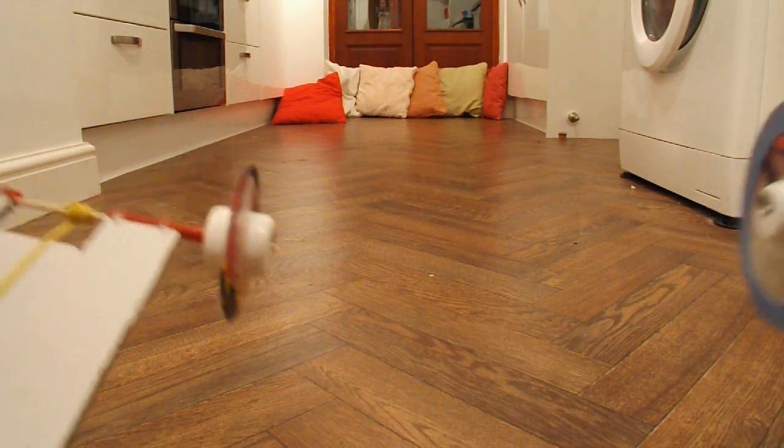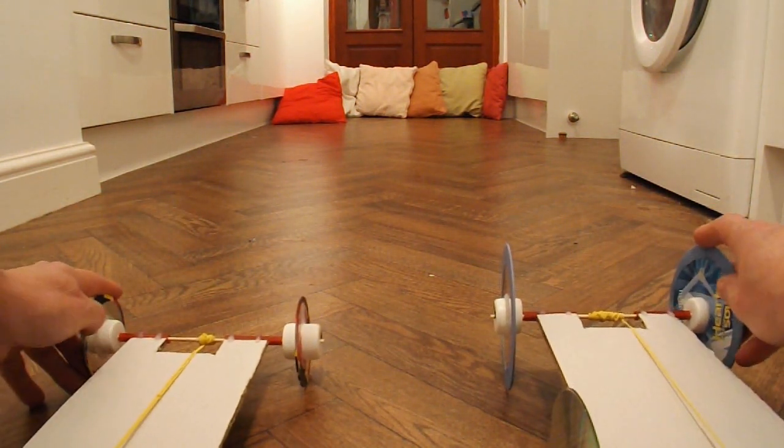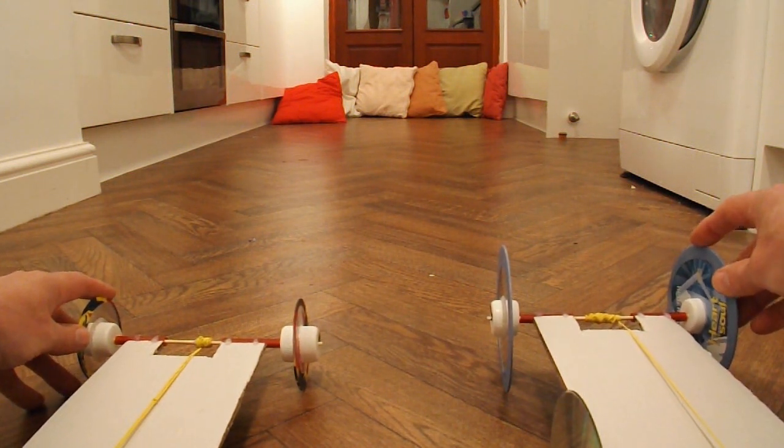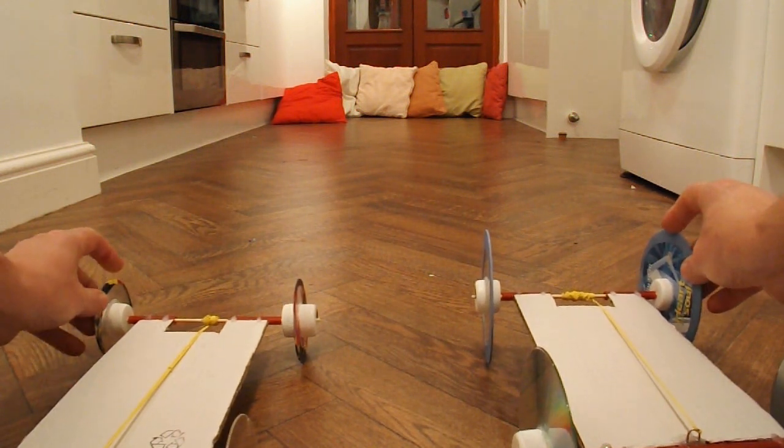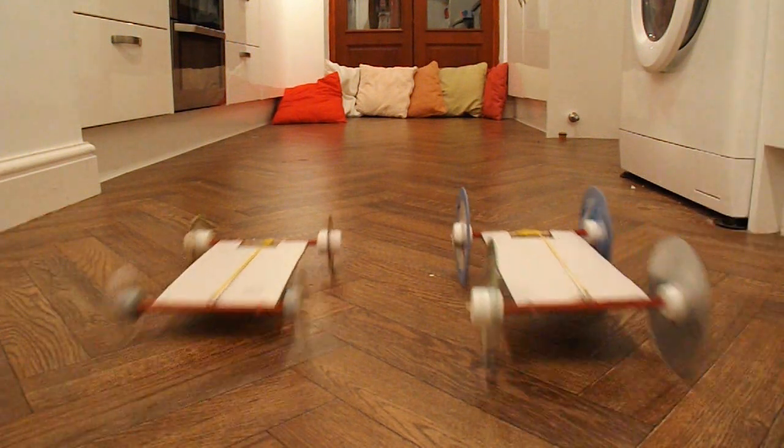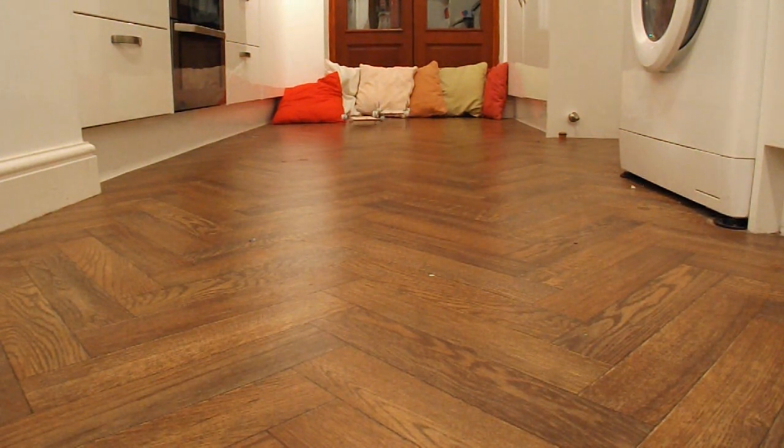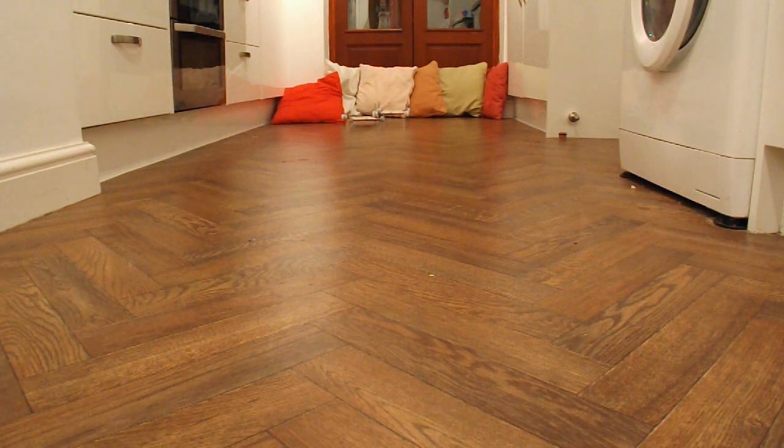OK, one final comparison. I've turned the cars round so the rubber band powered axle is at the front of the car rather than the back. So, we'll just see if there's any difference. Well, I'd expected them to wheel spin, but they didn't. So, we learn something every day.